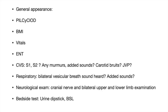Keep your systemic questions short but comprehensive. For the cardiovascular system: ask whether first and second heart sounds are heard, any murmurs or added sounds, carotid bruit, and JVP elevation. For the respiratory system: ask whether bilateral vesicular breath sounds are heard and whether there are any added sounds. If pneumonia is suspected, also ask about inspection, palpation, and percussion findings. After systemic examination, ask about bedside tests such as urine dipstick or blood sugar levels.